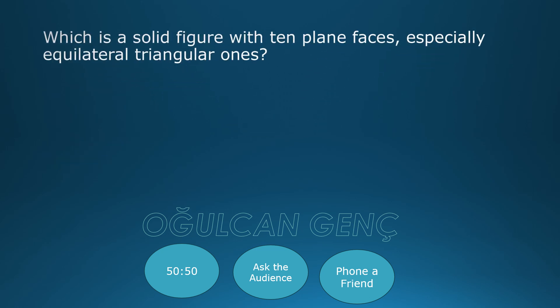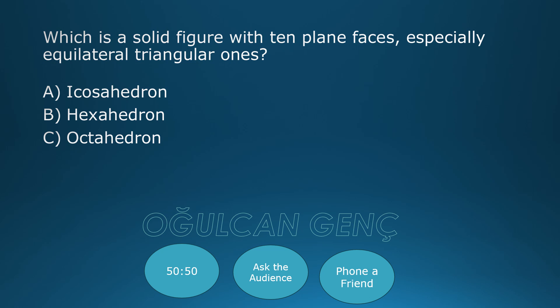Which is a solid figure with ten plain faces, especially equilateral triangle ones? Options: Icosahedron, Hexahedron, Octahedron, Tetrahedron. Final answer: Icosahedron. Correct answer is Icosahedron.